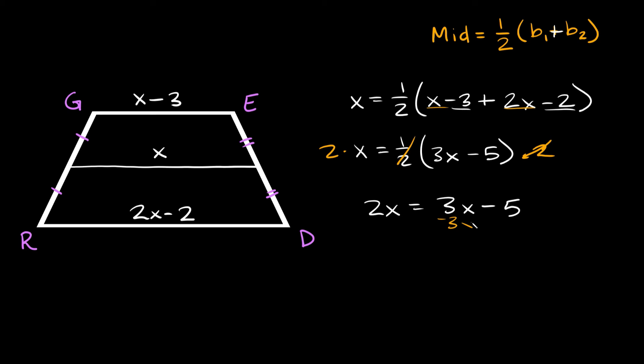So then here, we can subtract 3x from both sides. 2x minus 3x is equal to negative 1x, and that's equal to negative 5. Now, to get rid of this negative 1, the last thing we can do is divide both sides by negative 1. Those cancel out, so then here we're just left with x is equal to positive 5.